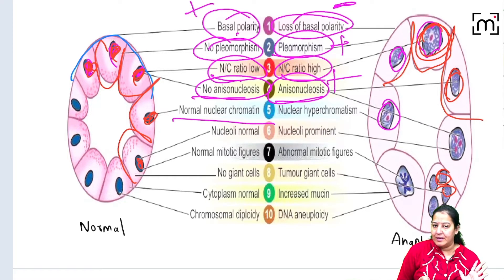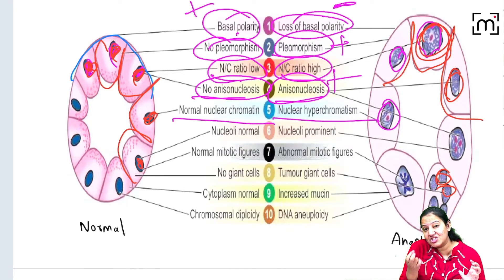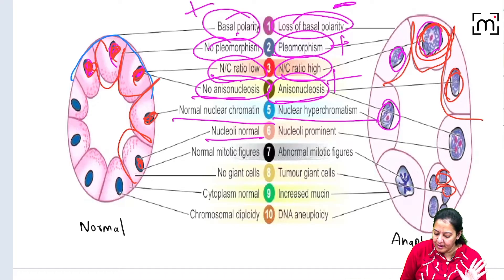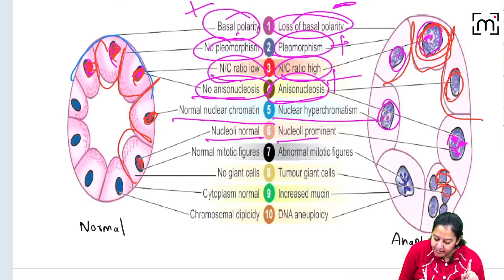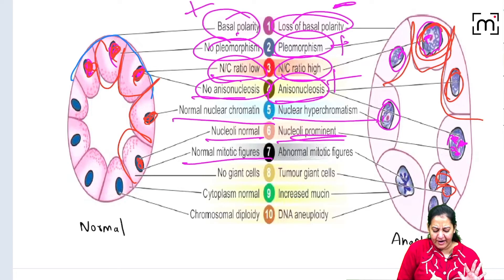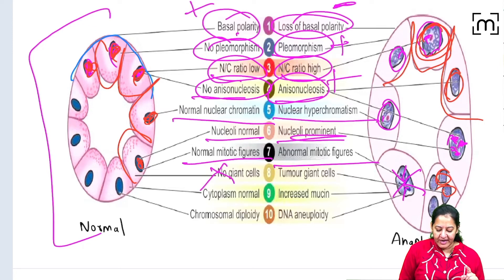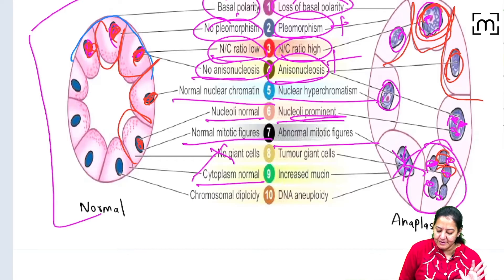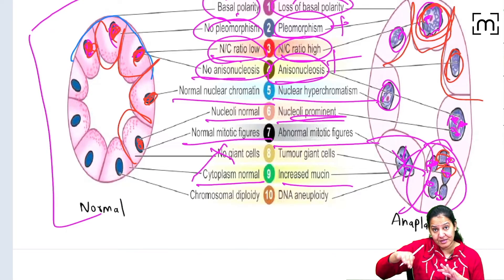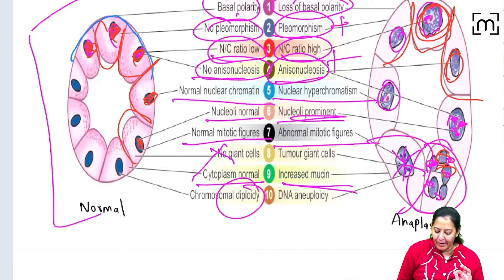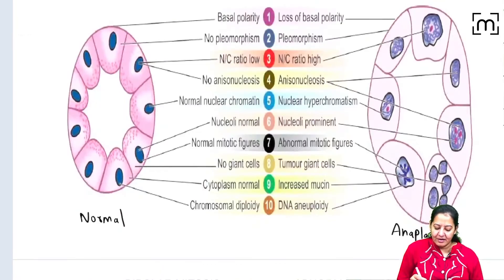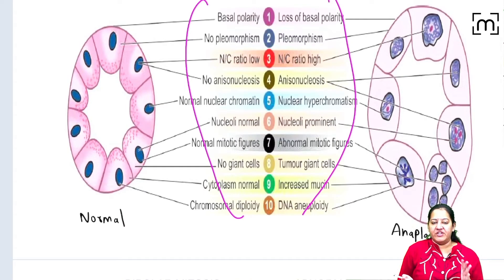Continuing the features of anaplasia: sixth, prominent nucleoli — nucleoli inside tumour cells become very prominent. Seventh, increased and abnormal mitosis — frequent spindle formation is visible. Eighth, tumour giant cells — giant cells with multiple nuclei are seen frequently. Ninth, abnormal cytoplasm — increased mucin may be present. Tenth, aneuploidy — normally cells are diploid but in malignancy there is aneuploidy. These 10 features constitute anaplasia.